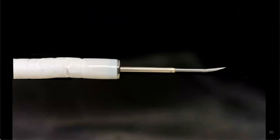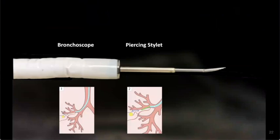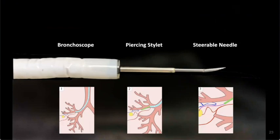Here's a close-up photograph of the device. We have the bronchoscope, the piercing stylet, and a steerable needle. And here's a video of the steerable needle getting pushed through gelatin. This is meant to show the sorts of curvilinear trajectories that the needle can follow.